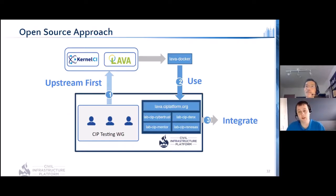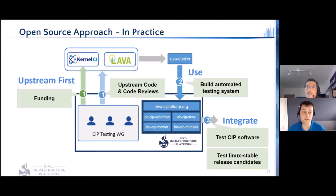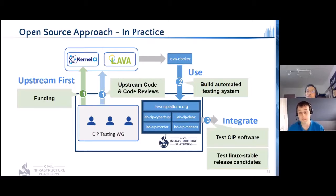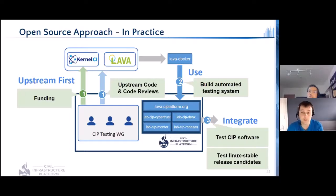On our open source approach: the first step is always upstream first to relevant projects. We then take the output of these projects and integrate them into our own setup. Specifically for testing, we're currently funding Kernel CI. As a premium member, we're also helping to manage and steer the direction of the project. We contribute code and do code reviews on projects like Lava, Kernel CI, and Linaro's automated test definitions. We then use outputs such as Lava Docker to manage our board farms and run automated testing on CIP software — the SLTS kernels and our reference file system — and also on Linux stable release candidates from Greg and Sasha.